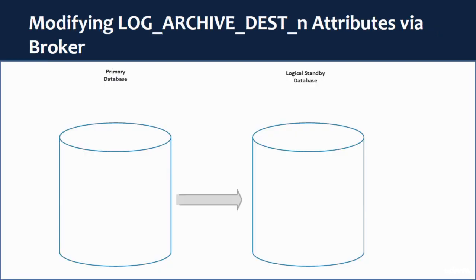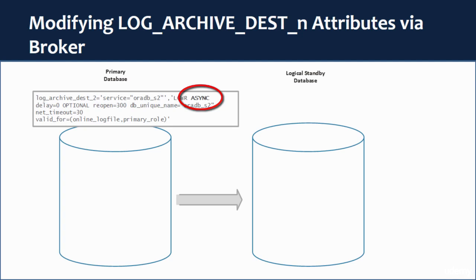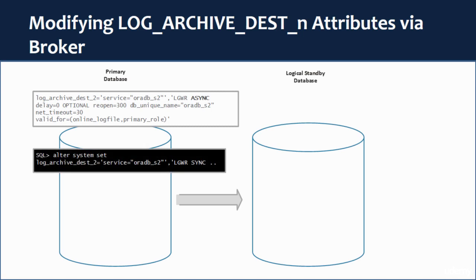This slide explains the difference between changing the redo transport method using SQL*Plus versus the DGMGRL command line. In our example we have a primary database and a standby database named oradb_s2. You set one of the log archive destination parameters in the primary database to make it connect to the standby. We assume log archive destination 2 is configured to use synchronous redo transport. If your Data Guard configuration is managed by SQL*Plus, to change to synchronous method you connect to the primary and issue the ALTER SYSTEM statement to set the SYNC attribute.